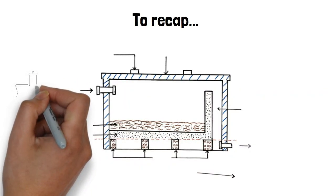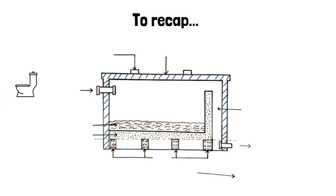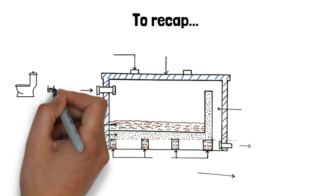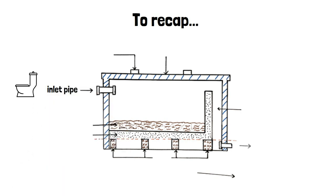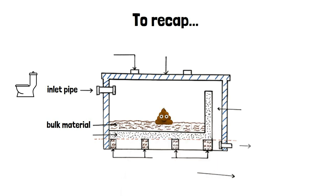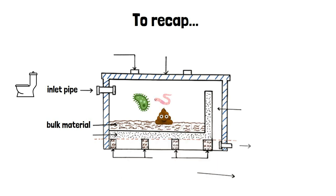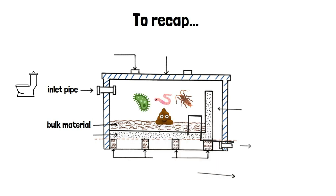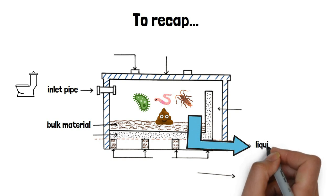So, to recap this section, after flushing your toilet, your black water enters the biodigester through the inlet pipe. It lands on the bulk material, where the solids are trapped and digested by the bacteria, earthworms, and cockroaches. The liquids flow downwards through the filter layer to the concrete beams towards the outlet pipe.